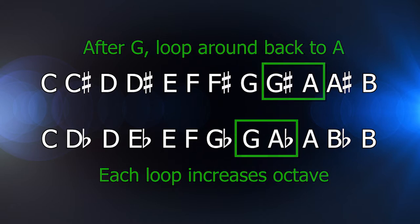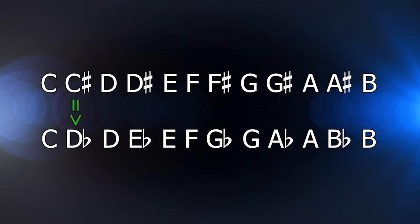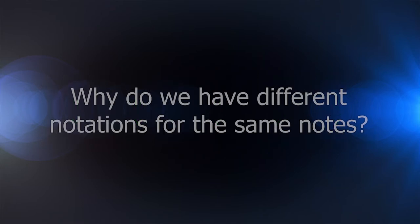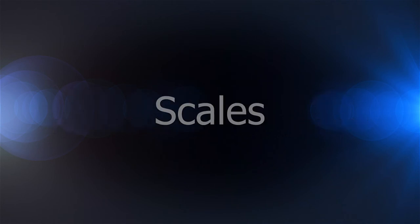Another thing you may have noticed is that C sharp is equivalent to D-flat, D sharp is equivalent to E-flat, and so on. Why do we have different notations for the same notes? Well, it has to do with scales, which I cover in more detail in future lessons, so if this is a little confusing now, don't fret about it.